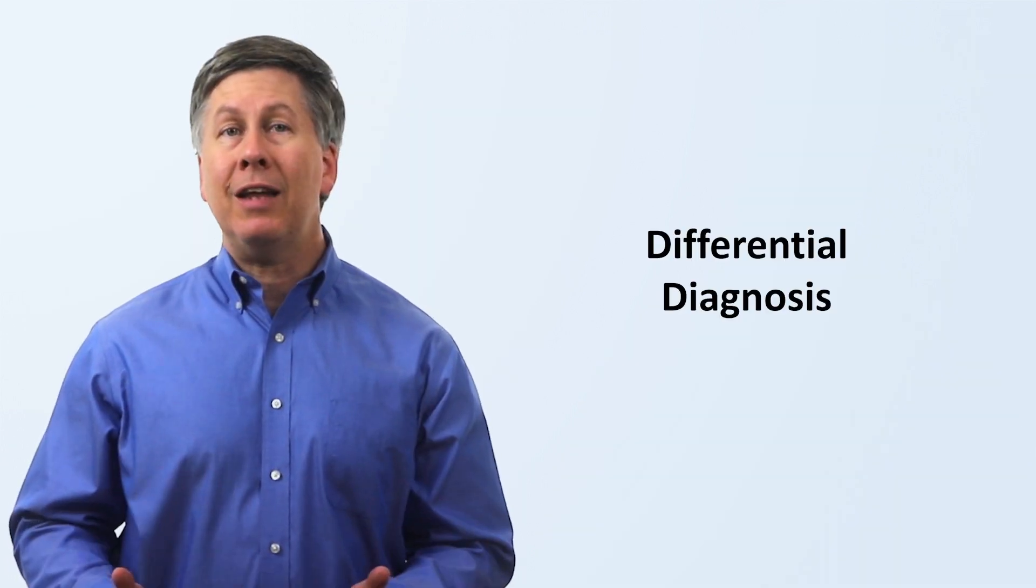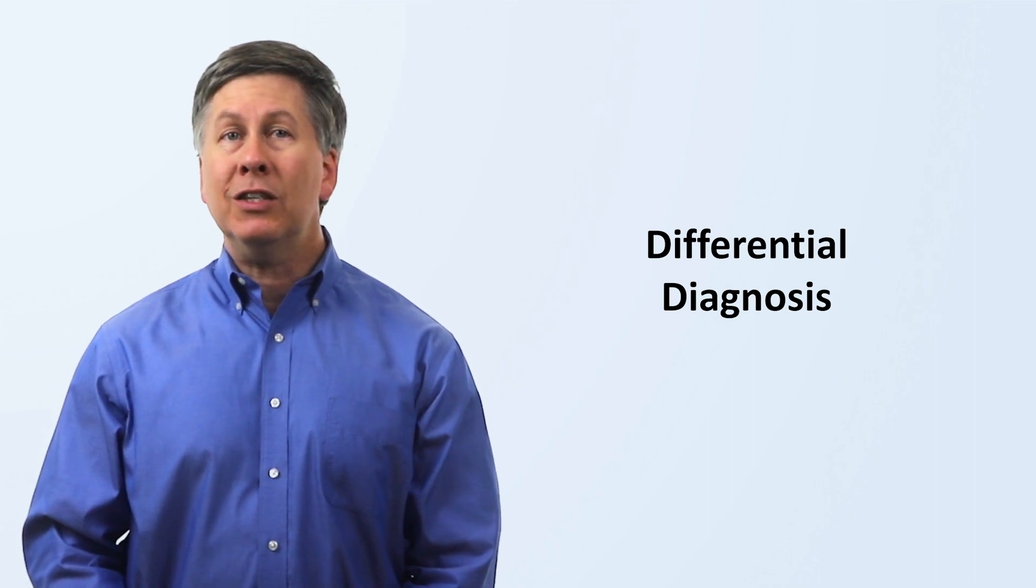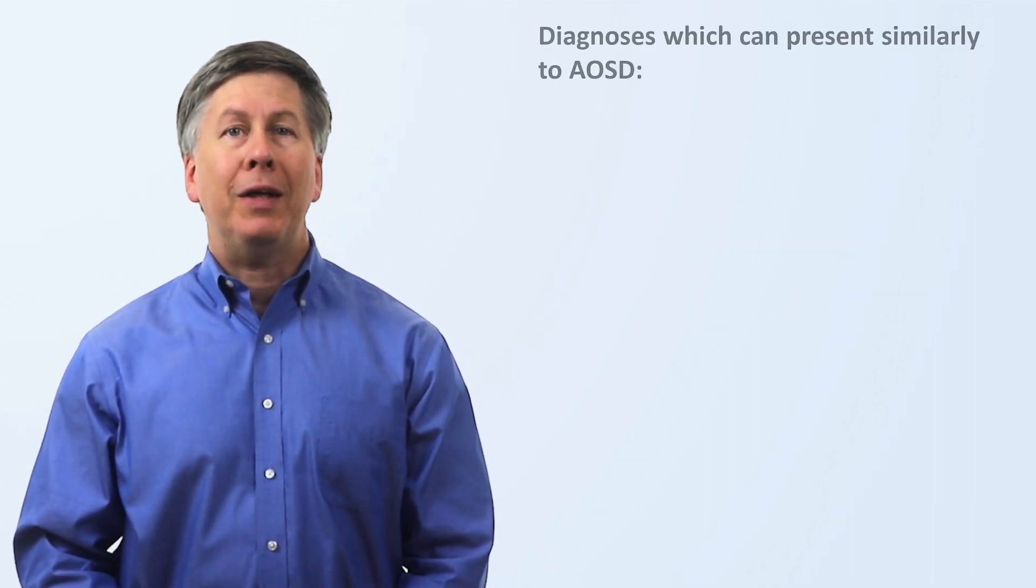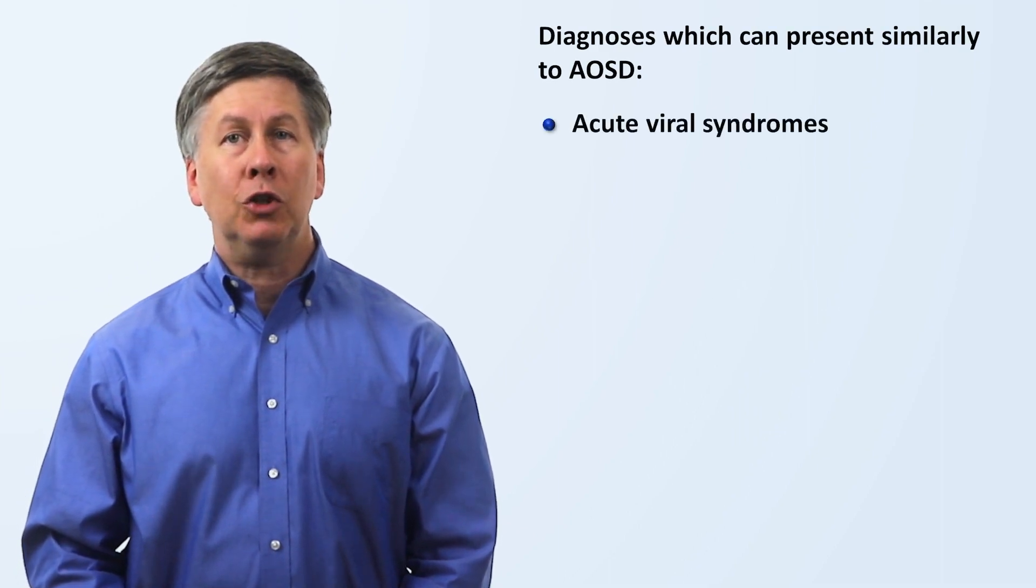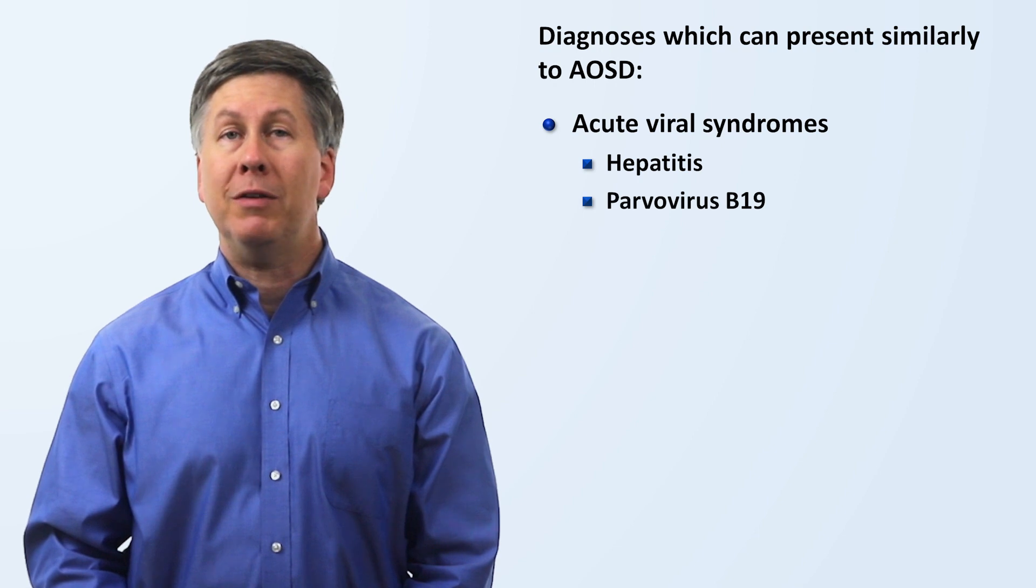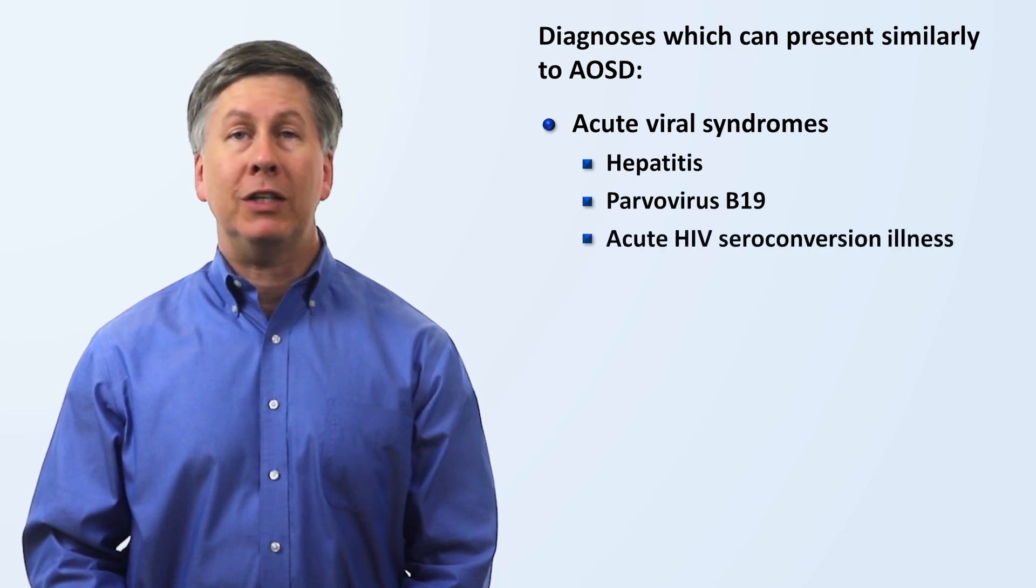As has been stated and inferred, there are a number of other diseases which can present similarly to adult-onset Still's disease. These include acute viral syndromes such as those caused by hepatitis, parvovirus B19, and acute HIV seroconversion.